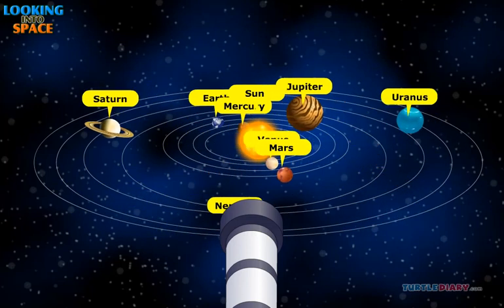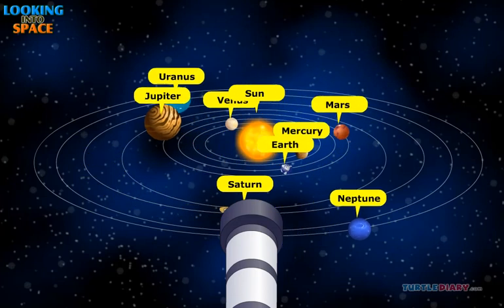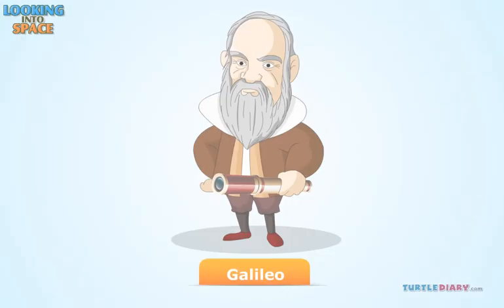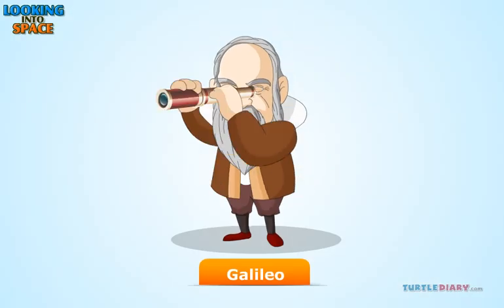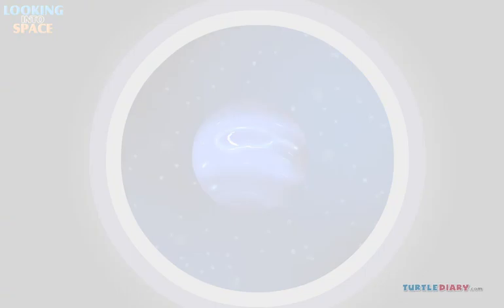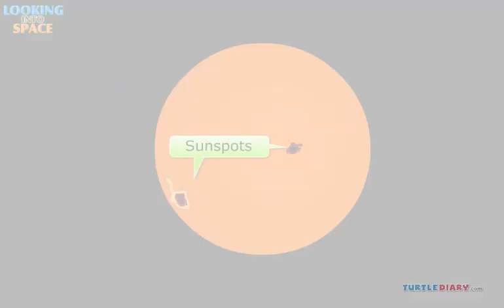Long ago, people did not know much about the stars, the planets, or the sun. Then, a man named Galileo built and used a telescope. He found out many things using it. He saw four moons around Jupiter. He was the first to see sunspots.